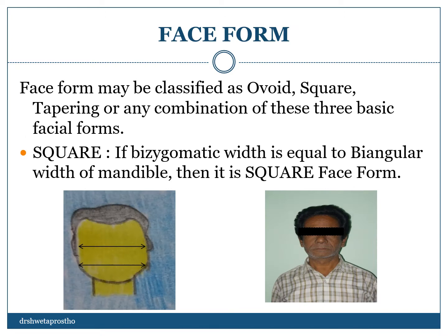Face form. We record the face form of the patient by looking from the front — stand in front of the patient and then record the face form. Face form can be ovoid, square, tapering, or any combination of these. Looking at the picture, we see the square face form, where the bizygomatic width is equal to the biangular width of the mandible. Similarly, we analyze this for the patient.